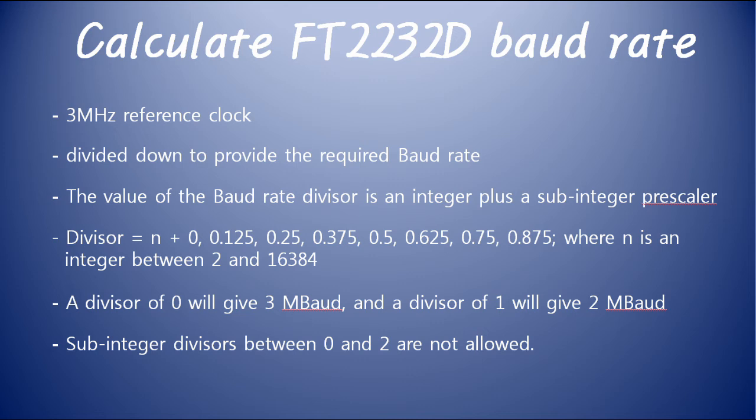The FT2232D internally uses 3,000,000 Hz as the reference clock. The N divisor uses N plus 0, N plus 0.125, N plus 0.25, N plus 0.375, N plus 0.5, N plus 0.625, N plus 0.75, and N plus 0.875, where N ranges from 2 to 16,384.